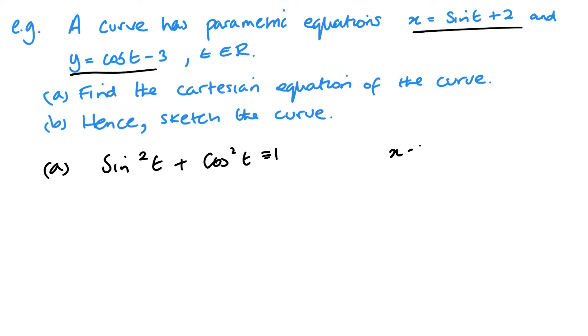I've got x minus 2 will be equal to sine t. And if I add 3, I get y plus 3 is equal to my cos t. I can now substitute these in. Sine squared will be x minus 2 squared. And cos squared will be y plus 3 squared. And that then will be equal to 1. This is my Cartesian equation.